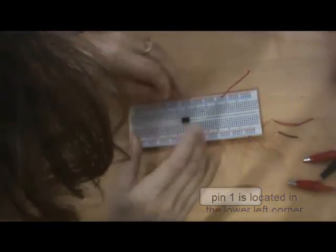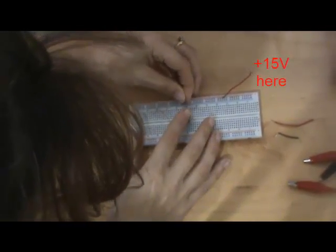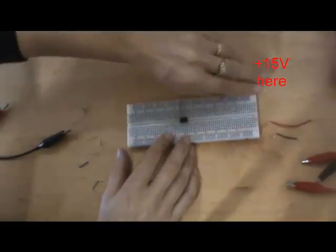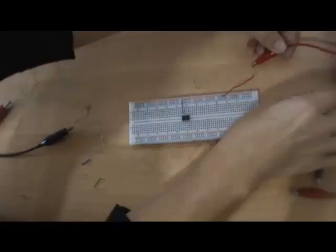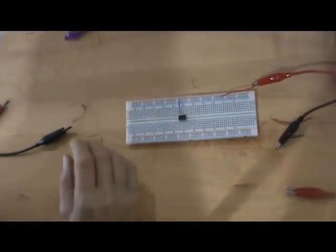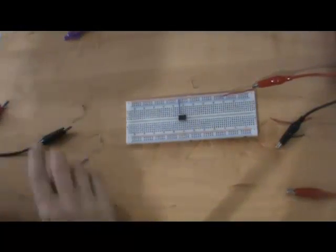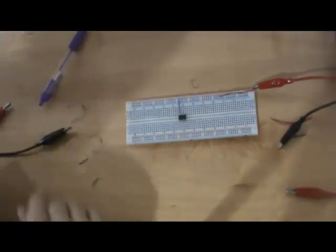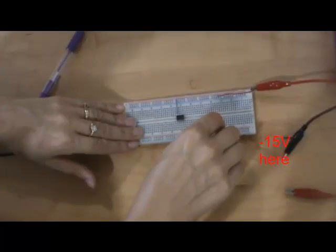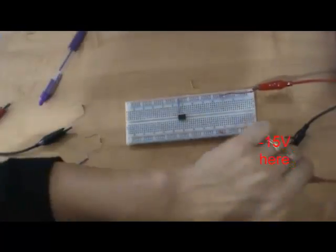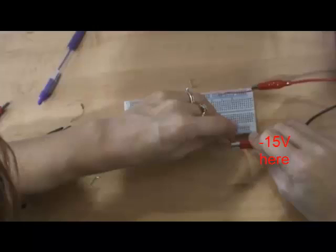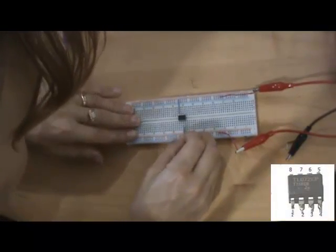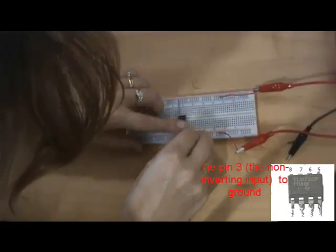Use the top red rail for the plus 15 power supply, and tie pin 8 to the top rail with the color-coded wire. Then use the bottom red rail for the negative 15 volt power supply, and tie pin 4 to the bottom rail. Make the blue rail the reference point, or the ground, and tie pin 3 to the ground according to the circuit schematic. Now you can hook up the dual power supply to the rails at the edge of the board, and create more room in the center of your breadboard.